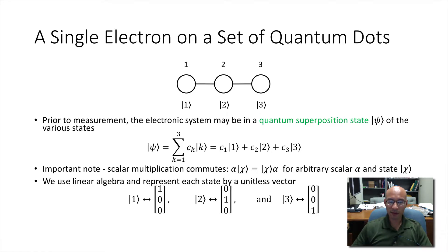Now prior to measurement, the electron can be in what we call a quantum superposition state, psi. Where if you look here, psi in the middle is the sum of these various states and each sum has its own weighting, C sub K. But it's important to note that scalar multiplication commutes.